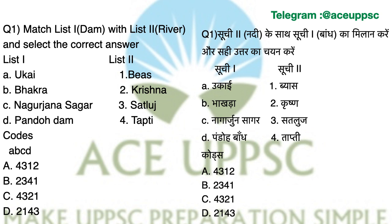Question number 1. Match list 1 with list 2. List 1 mein kuch dams given hain, list 2 mein kuch rivers given hain. Aapko batana hai ki yeh dam kaun si river pe situated hai. Its answer is Answer C: 4, 3, 2, 1.